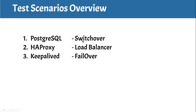We will try to perform a switchover to promote one of the secondaries to become the new primary. Then we will move to HAProxy and make sure it is capable of identifying the new primary and forwarding read-write connections to it. Then we will move to Keepalived and identify the Keepalived master node, stop the HAProxy service there, and see if Keepalived can fail over the virtual IP to a backup node where HAProxy is healthy and promote it to become the new master. Once these scenarios succeed, the configuration is correct and we can go to production.